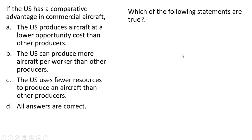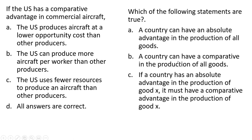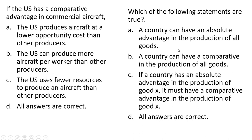Which of the following statements are true? A country can have an absolute advantage in the production of all goods — that is true. A country can have a comparative advantage in the production of all goods — that is false. Question C is also false. So the correct answer here is just A.